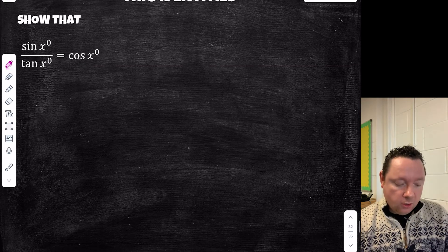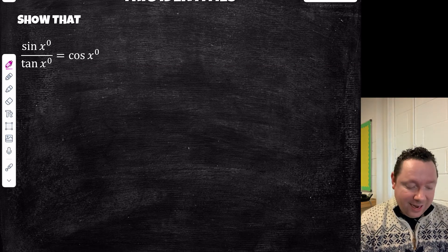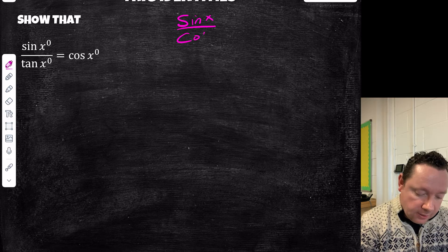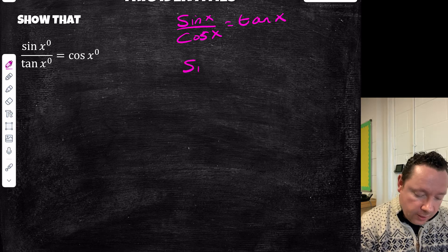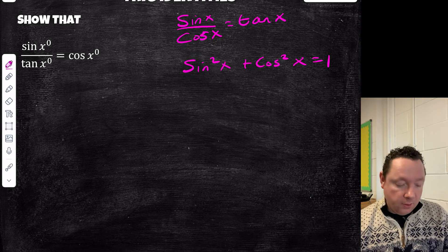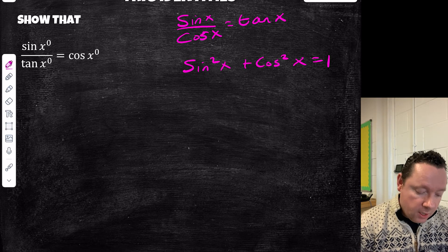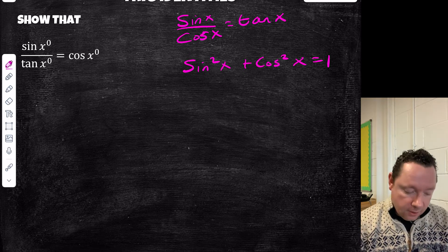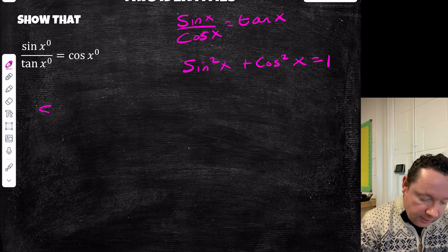Example 2: show that sinx / tanx = cosx. Starting by writing our trig identities: sinx/cosx = tanx, and sin²x + cos²x = 1. We're going to use the first identity since there are no squares in the question. Remember to start with the left-hand side — don't say it equals the right. Just start with the left and try to get to the right. So the left is sinx divided by tanx.